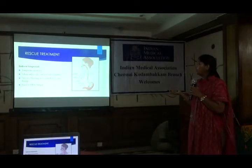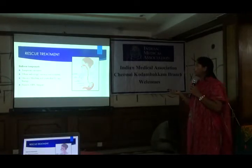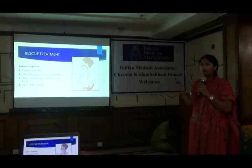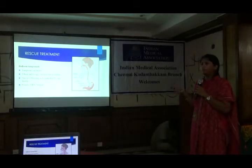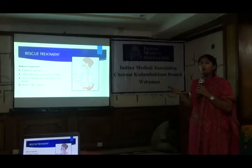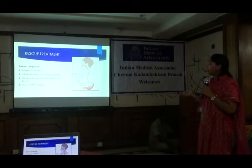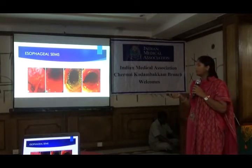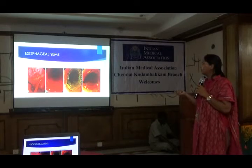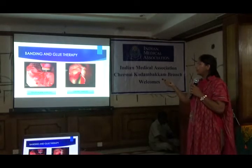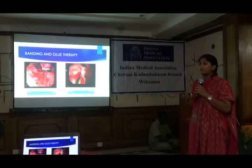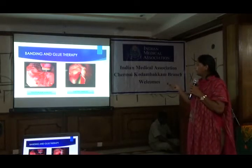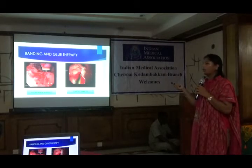For the approach to variceal bleed, balloon tamponade is no longer commonly used — only as a temporary measure where endoscopy services are unavailable, when massive ongoing bleed persists after endoscopic therapy, or prior to surgery. Esophageal metallic stent placement is also used as a rescue treatment in torrential bleed. Banding therapy for esophageal varices is performed only when they bleed, banding at intervals until obliterated. Glue therapy is used for gastric varices.